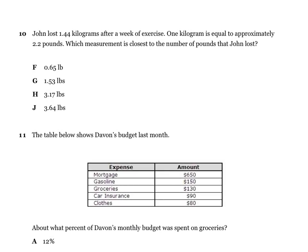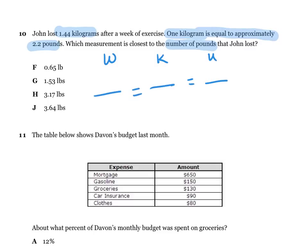Number ten: John lost 1.44 kilograms after a week of exercise. One kilogram is equal to approximately 2.2 pounds. Which measurement is closest to the number of pounds that John lost? Set up the proportion: 1 kilogram equals 2.2 pounds. You have to define what is the known and what is the unknown.